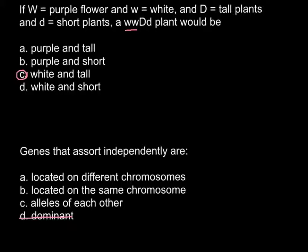So answer C is not appropriate here. Answer B, located on the same chromosome, is also incorrect. The correct answer is answer A: in order to assort independently, genes have to be located on different chromosomes. This is the correct answer.